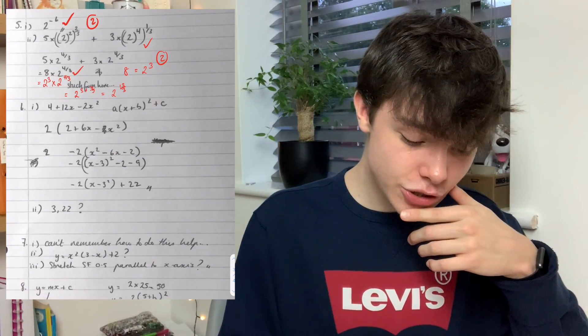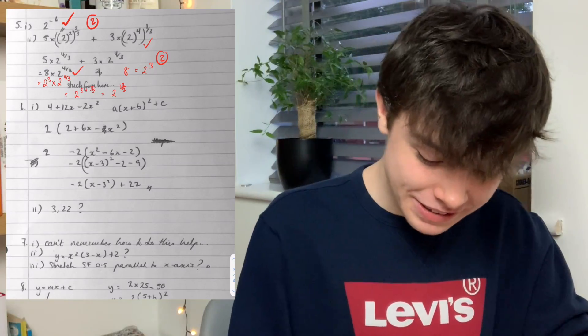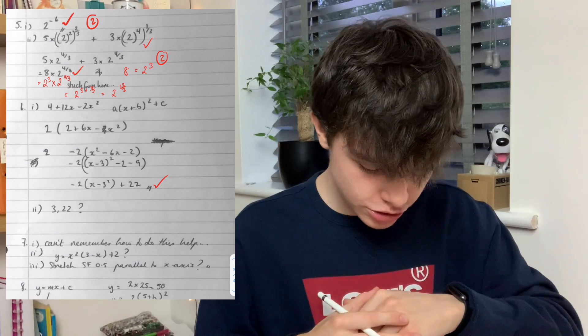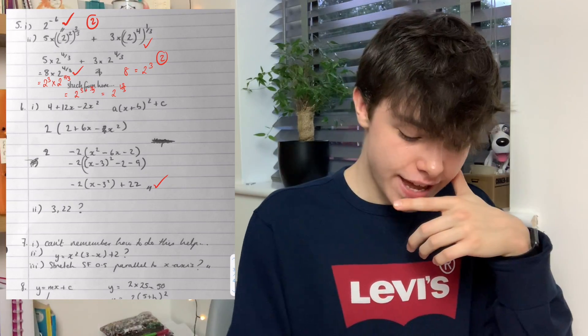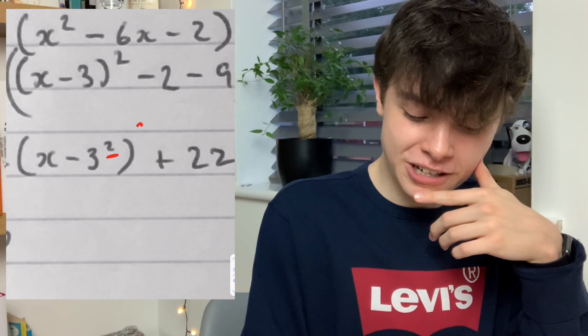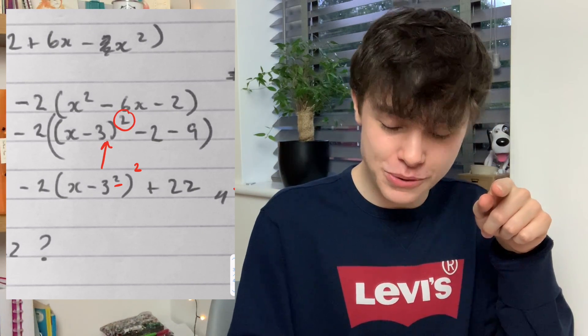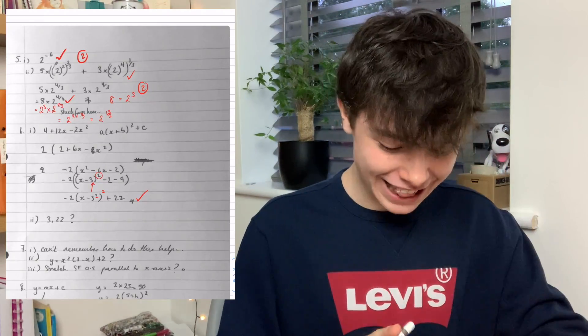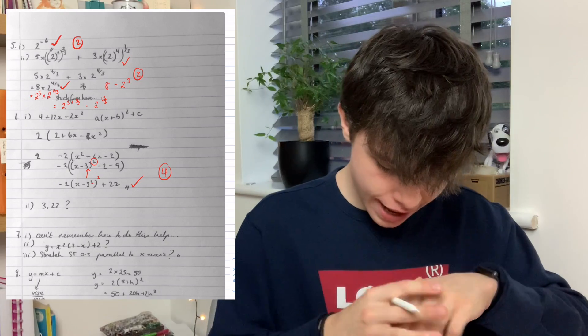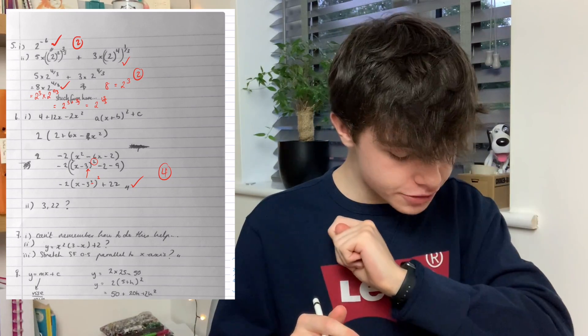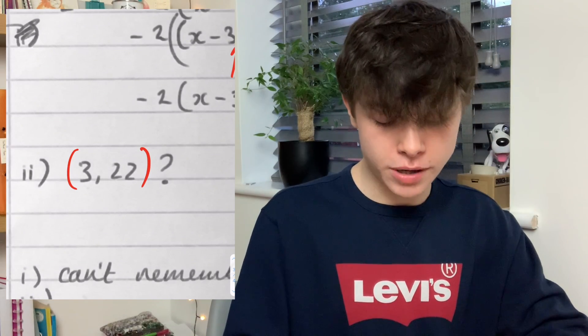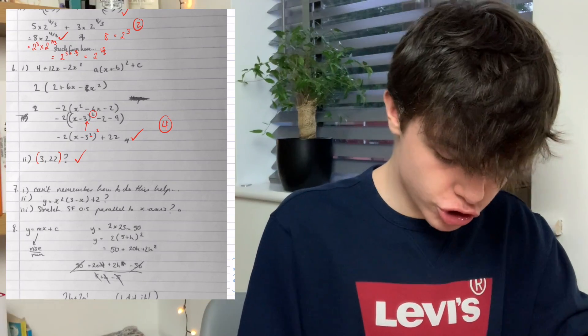For question six we needed to turn the quadratic into completed square form and this one was correct. So we can give all four marks for that question. Oh do I be mean here? This squared here should actually be there. So what that means is that answer is wrong but if we look above we can see that the squared is outside the bracket there. So I'll let you have it. I'll give you four marks. Part two we needed to work out the maximum of that quadratic and 322 was correct. You've just forgotten your brackets but that's fine. So that is an extra two marks.